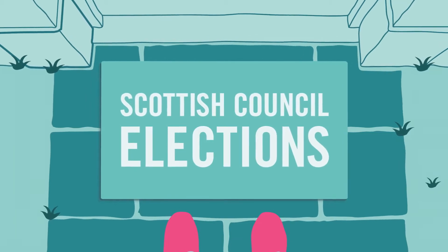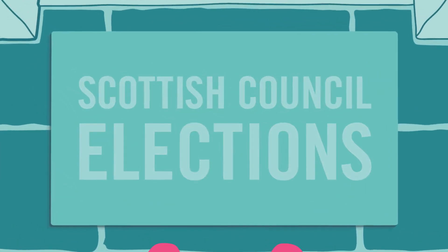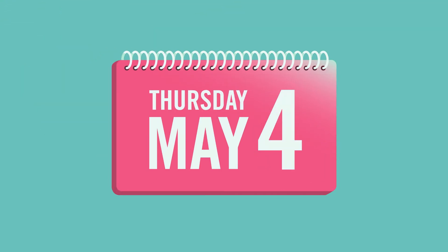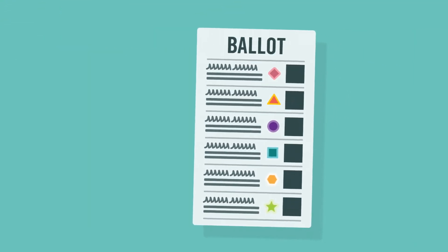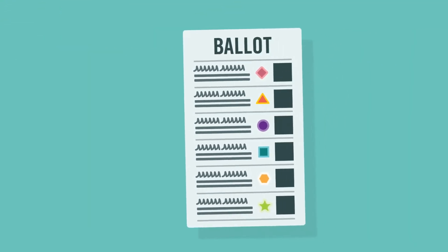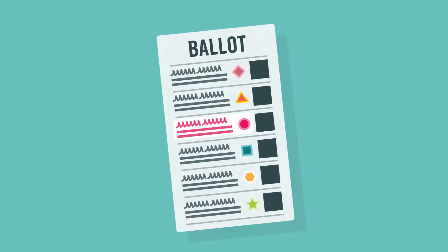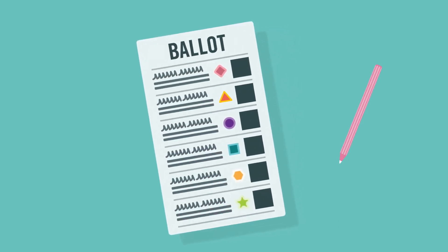Scottish Council elections are happening on your doorstep. There's something you need to know about voting on Thursday the 4th of May. You receive a ballot paper as usual, but in this election, you need to number the candidates on your ballot paper in order of your choice.